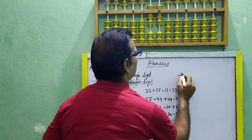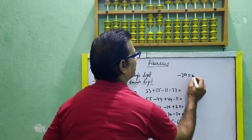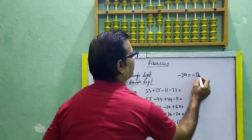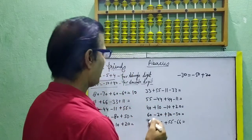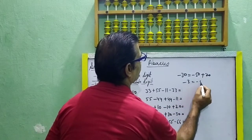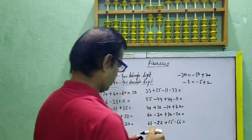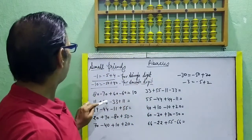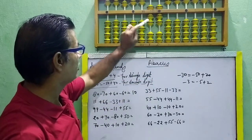Minus 30 is equal to minus 50 plus 20. And for single digit: minus 3 is equal to minus 5 plus 2. You will use this for the double digit tens place. This place: minus 30 is equal to minus 50 plus 20.